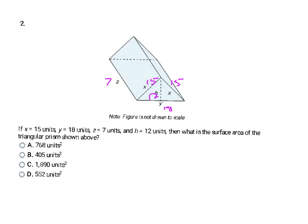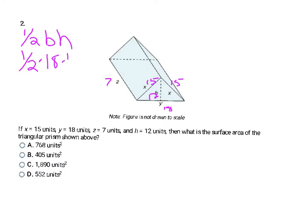Now I'm asked to find the surface area of a triangular prism. I've labeled the sides with the given values — copy down this figure and do the same. I'll find the surface area by calculating the area of both triangles and the three rectangles and adding them together. The two triangular faces are equal: one-half times base times height = one-half times 18 times 12. Half of 18 is 9, and 9 times 12 is 108 per triangle, so both triangles together give 216.